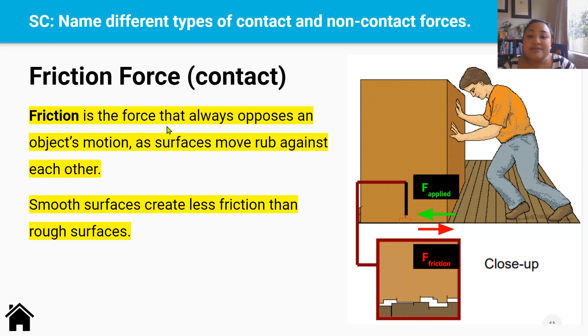Friction force is another important contact force. Friction is the force that always opposes an object's motion as surfaces move and rub against each other. So smooth surfaces, let's say like ice, if you skate on ice, create less friction than rough surfaces like concrete.